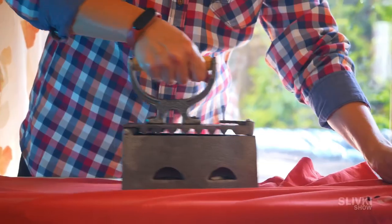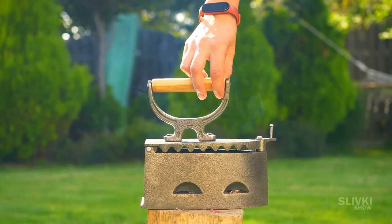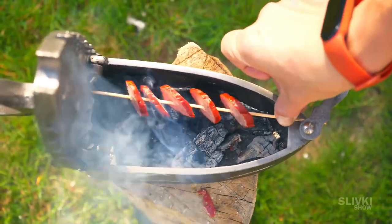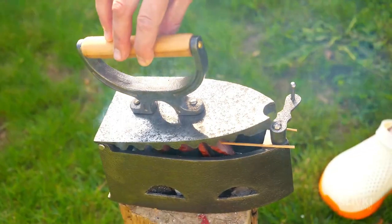And after work, you can open the lid of the iron and roast some sausages on it. As a bonus, we get a pocket mini-grill! I wonder if anyone thought of frying meat on one 100 years ago.